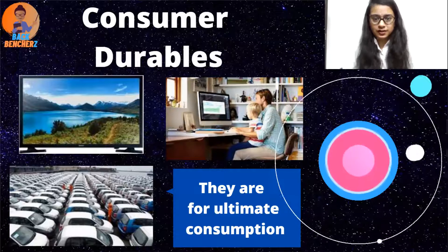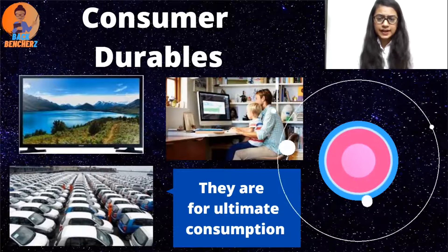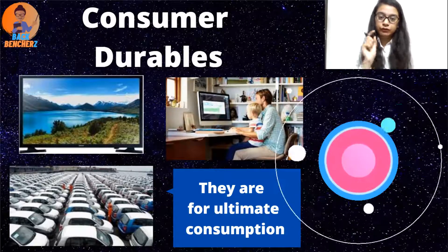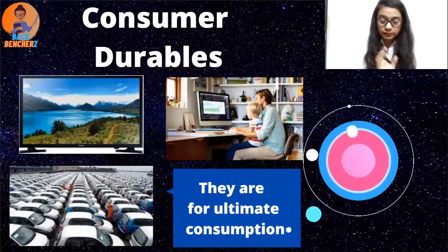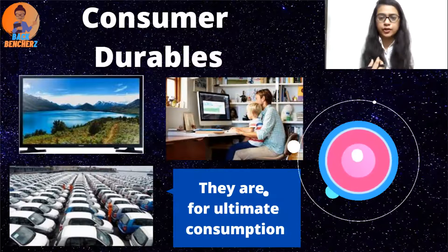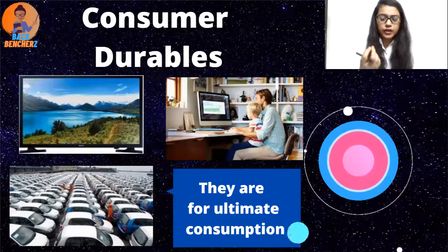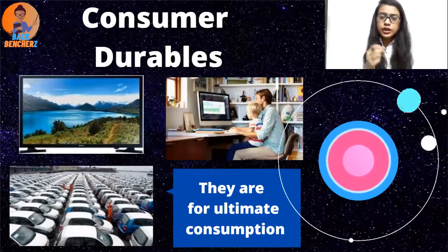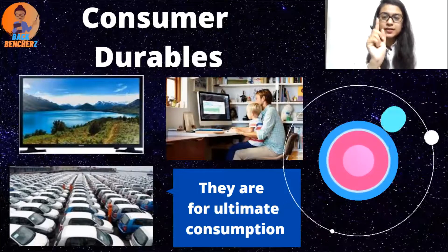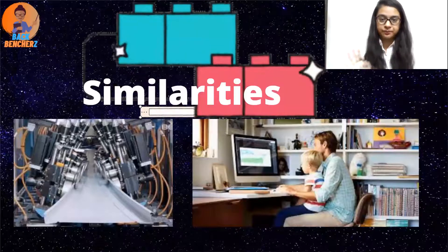Consumer durables have a higher duration than others like vegetables or consumption goods. You might ask — if that's the case, why aren't they like capital goods? They are different because capital goods directly transform other things — like machines and tools — we don't consume those ourselves. But consumer durables like computers, automobiles, or TVs are used by ourselves only — that is ultimate consumption. However, one similarity between capital goods and consumer durables is their duration — both are used for a long time.